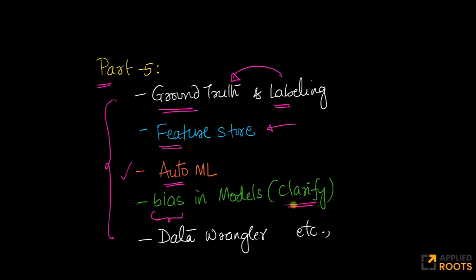This is primarily to ensure that the model is not biased to one set of users. Similarly, there is another component called Data Wrangler, which helps you obtain data, clean data, or do data pre-processing and data wrangling much more easily using a simple-to-use user interface. These are some of the most important miscellaneous features we will cover as part of SageMaker.